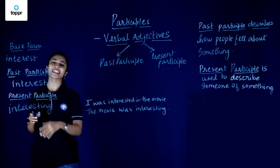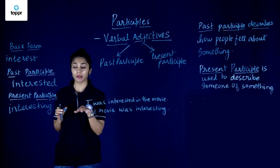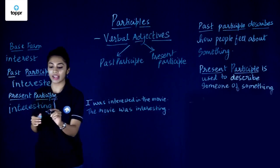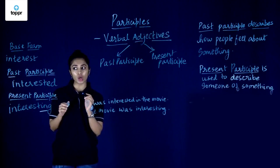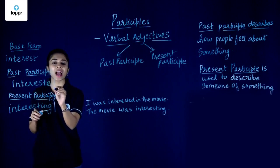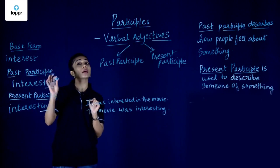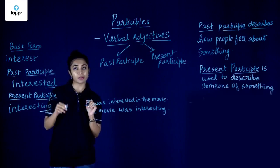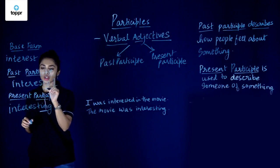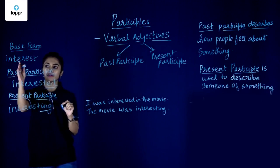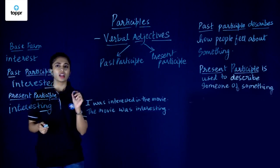An interesting thing here is that to form the present participle, you add an -ing, whereas in the case of regular verbs, we just add an -ed to the base form to form the past participle. So we have the past participle and the present participle.